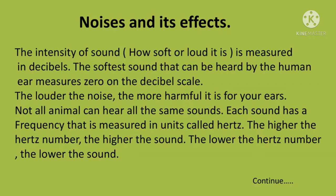The intensity of sound — how soft or loud it is — is measured in decibels. The softest sound that can be heard by the human ear measures zero on the decibel scale. The louder the noise, the more harmful it is for your ears. Not all animals can hear the same sounds. Each sound has a frequency measured in units called hertz — the higher the hertz number, the higher the sound; the lower the hertz number, the lower the sound.